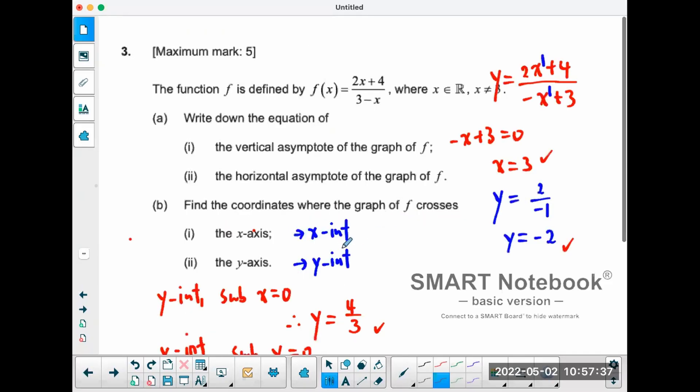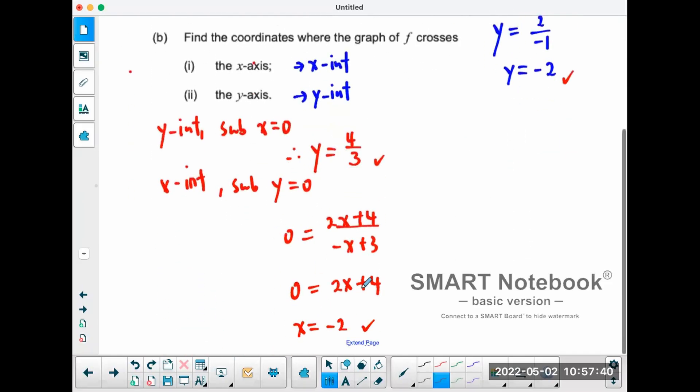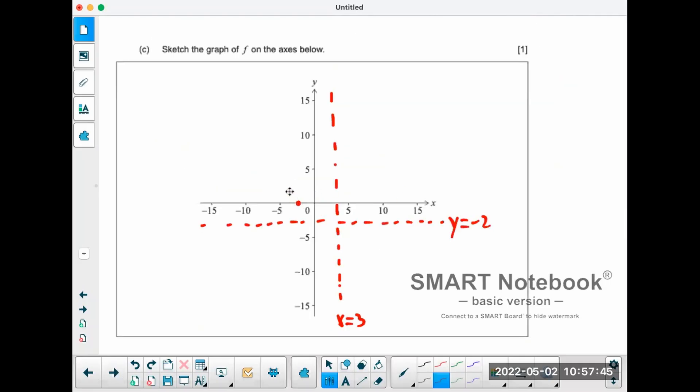You have the x-intercept at negative two. You have the y-intercept at four over three. So the graph is going to go up like this, it's going to go through the x and the y-intercepts, and there on the other side is going to be like that. And it's only one mark, so that means you got to have everything right for this particular mark.